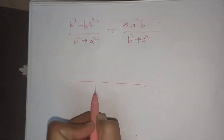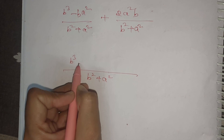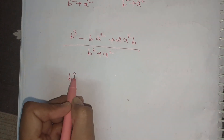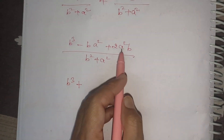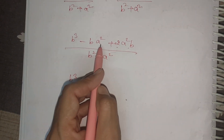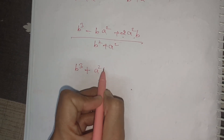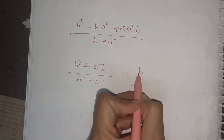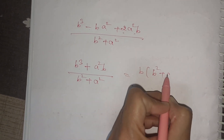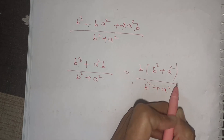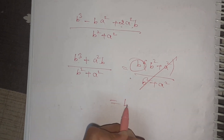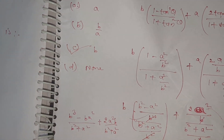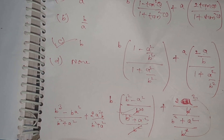Solving with LCM: b³ - a²b + 2a²b upon b² + a². Taking b common from numerator: b·(b² + a²) upon (b² + a²). The (b² + a²) cancels, giving the answer equal to b.